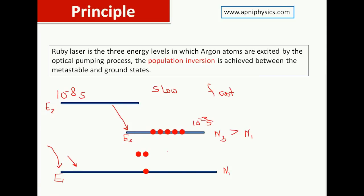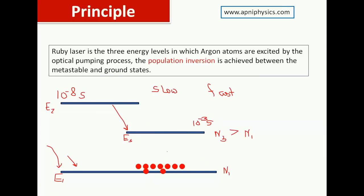These atoms come into the ground state and emit photons. All photons have the same frequency and same direction, giving monochromatic light with one wavelength. Since all atoms are in the same phase, the laser light is also unidirectional.